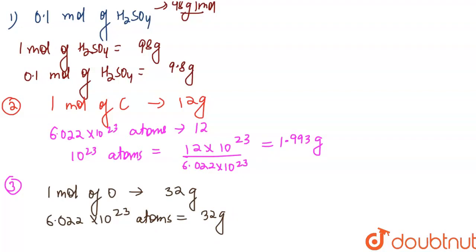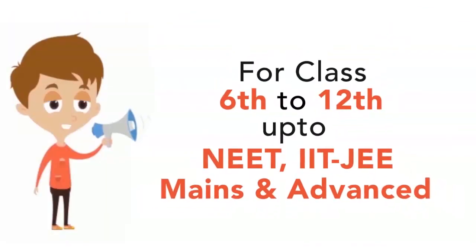Now we arrange them in increasing order of mass. The smallest is option 2 at 1.993 grams, then option 1 at 9.8 grams, and the largest is option 3 at 32 grams. So the increasing order is 2, 1, 3. Thank you.